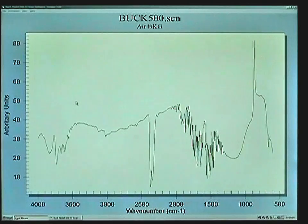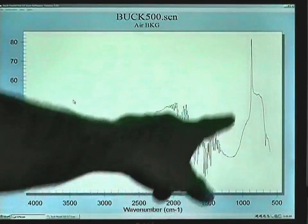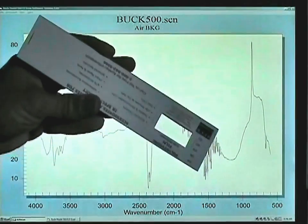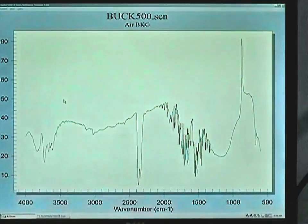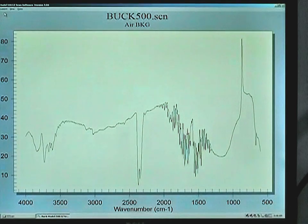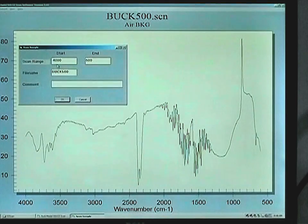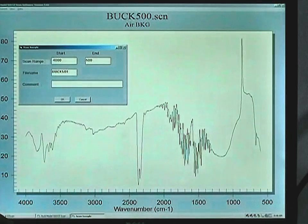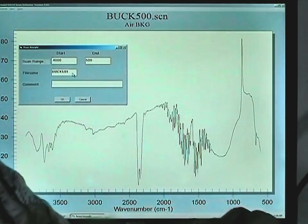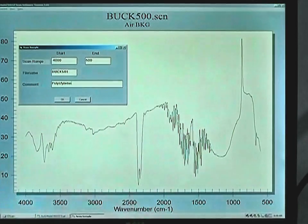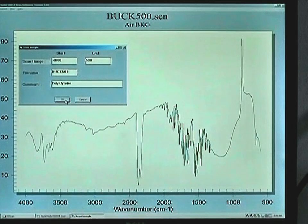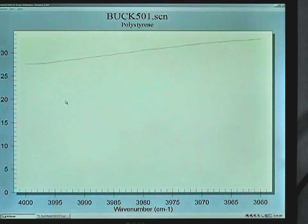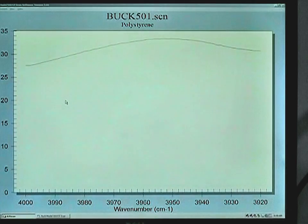When the single beam scan of the background is complete, you can see your profile of energy coming through the system. Take your polystyrene card, put it in the sample holder, click on Instrument, Scan, and when the sample ID window comes up, change the file name to Buc.501 or another appropriate file name, and put a comment in to identify the sample. Click OK. The system will reset itself and you will see the single beam spectrum of the polystyrene card being run.